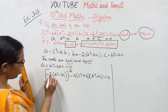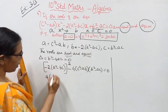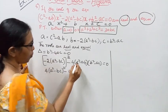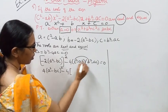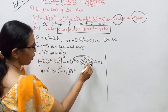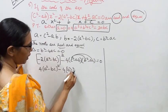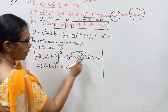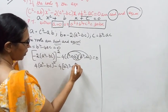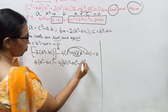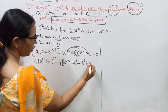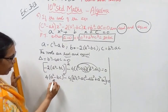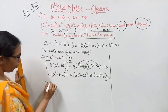Expanding: [-2(a² - bc)]² - 4(c² - ab)(b² - ac) = 0. This gives 4(a² - bc)² minus 4 multiplied by (c² - ab)(b² - ac). Expanding (c² - ab)(b² - ac): c²·b² - c²·ac - ab·b² + ab·ac = b²c² - ac³ - ab³ + a²bc.